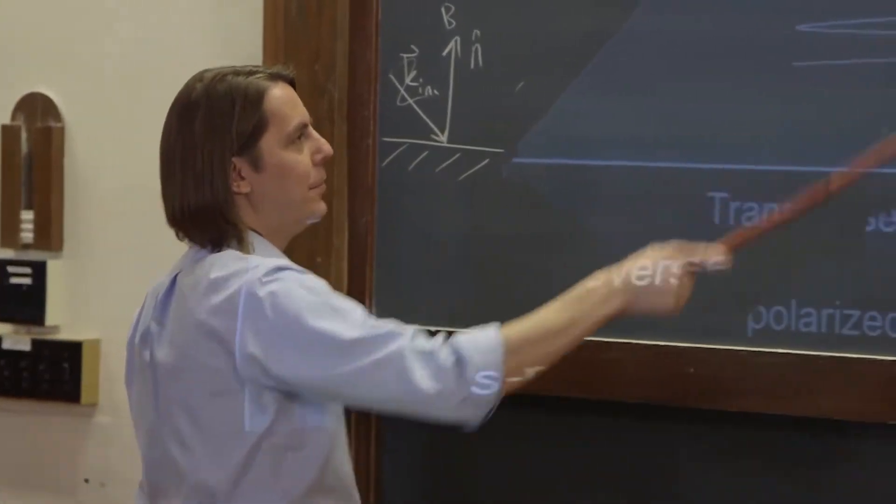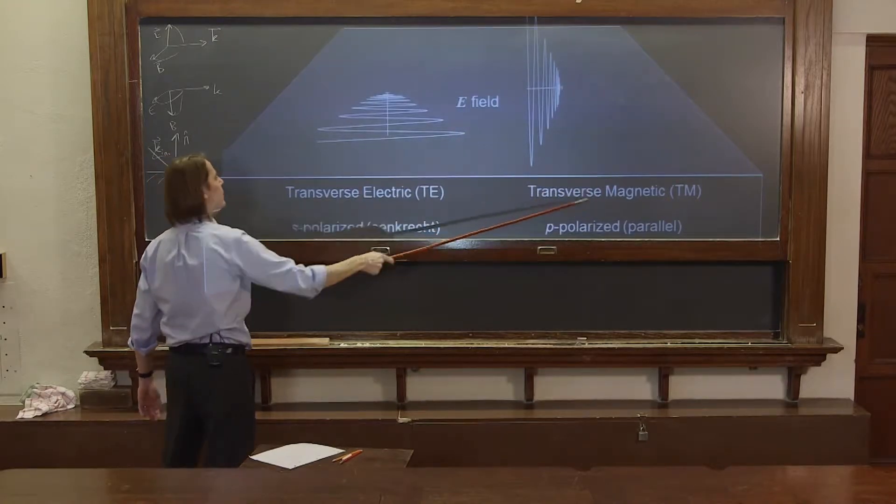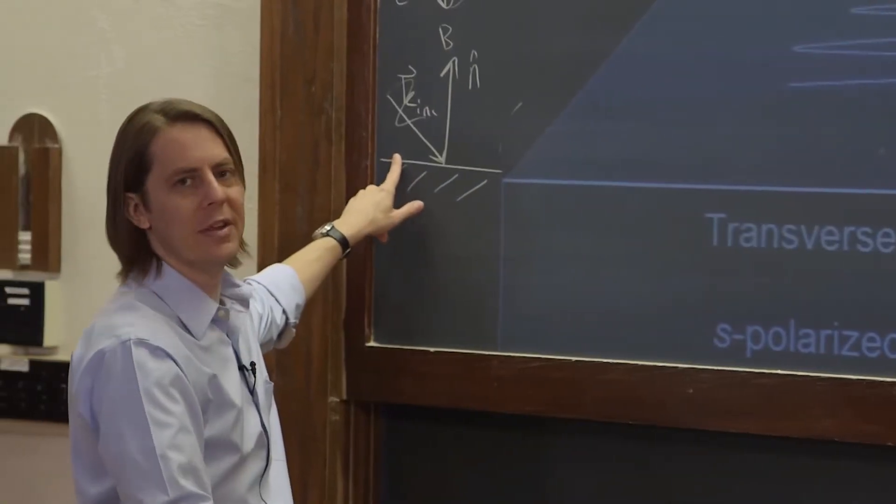Because remember, if the E field is doing this, the B field is always perpendicular to it. So in this case, the magnetic field is transverse to the plane of incidence. So that's TM.